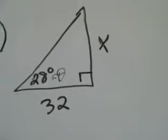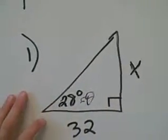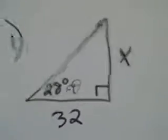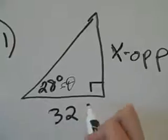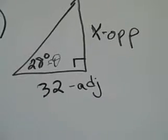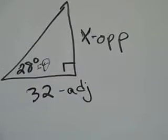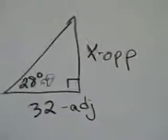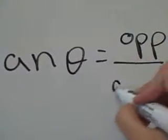The second step is to identify what types of sides you have in relation to wherever theta is. Theta is in the bottom corner, so X would be the opposite side, and 32 is next to theta, which means it is the adjacent side. The third step is to choose your trig function based on the types of sides you have labeled. Since I have opposite and adjacent, the function I need is tangent. So I write: tangent of theta equals opposite over adjacent.